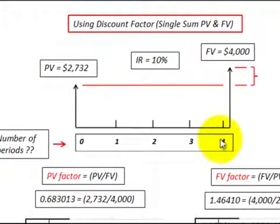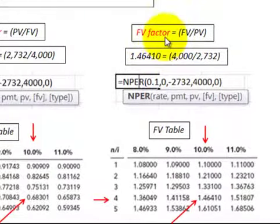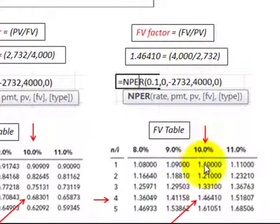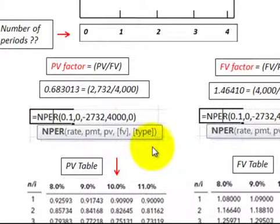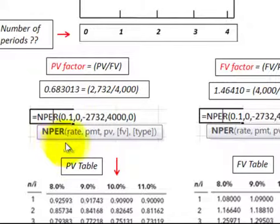So it takes four periods, or four years, at a 10% interest rate. The same approach applies with the future value factor: determine your future value factor, go down the future value table at your interest rate, find the factor amount, and move across to determine the number of periods. All of this can be replaced by using a financial calculator or an Excel function.